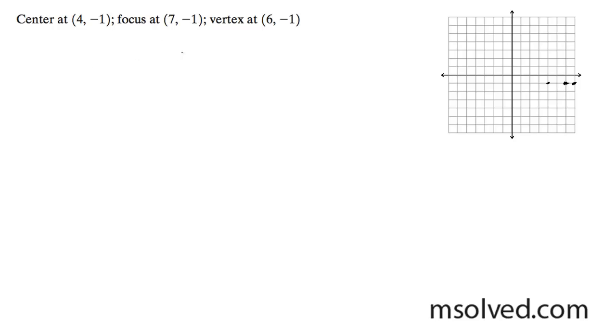To find the b component, we have the focus distance squared, which is 9 (that's 3 squared), minus the vertex distance squared, which is 4 (that's 2 squared). And this gives us the square root of 5.